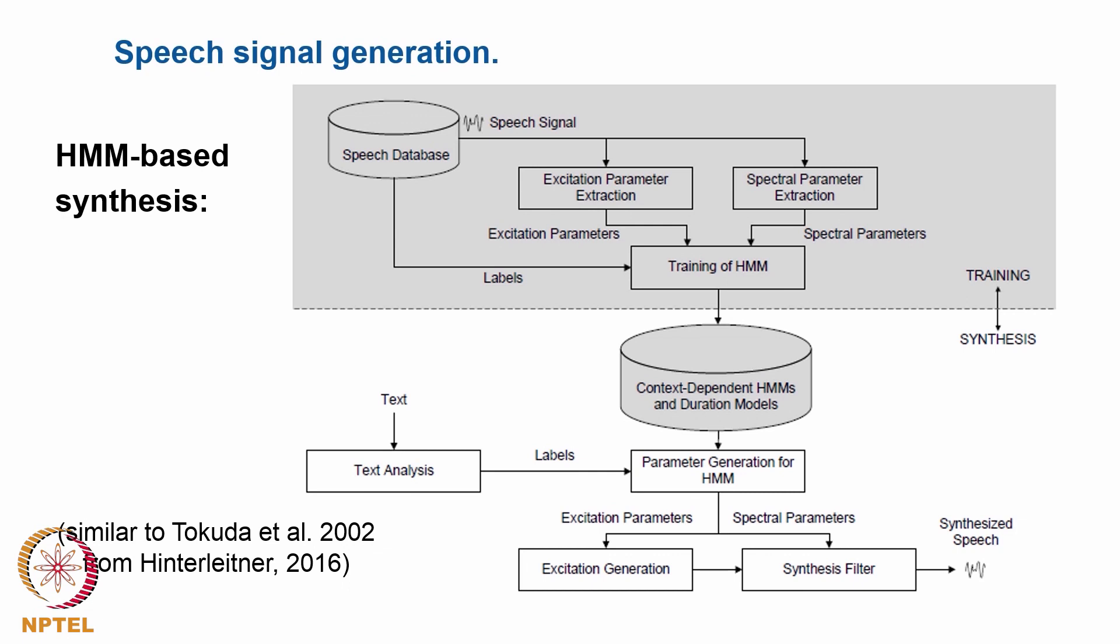This is done in two steps. You first have to train the hidden Markov model in terms of providing a speech database and training parameters related to the excitation process and to the vocal shaping process, which correspond to individual sounds, which are included in the labels here, and then put that information into a trained hidden Markov model.